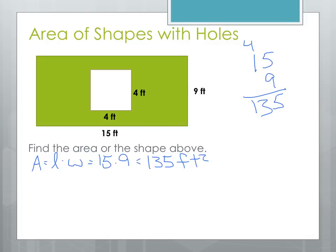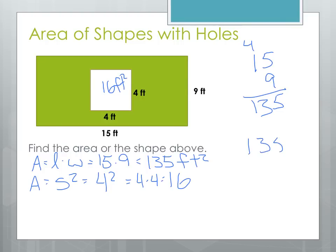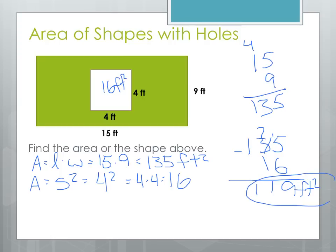Then we have to find the area for the square inside. That area is side squared, or 4 squared, which is 4 times 4, or 16 square feet. To find the total area of the shaded portion, we subtract the two: 135 minus 16. We have to borrow, so our total area for the shaded portion is 119 square feet.